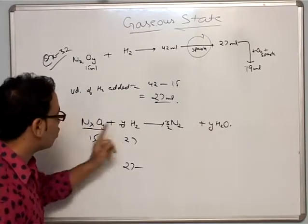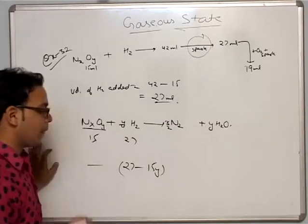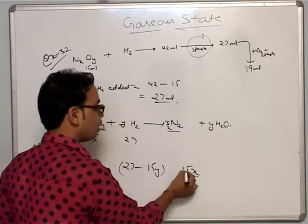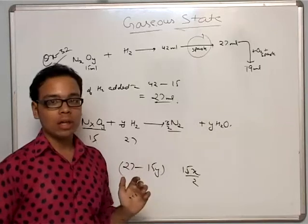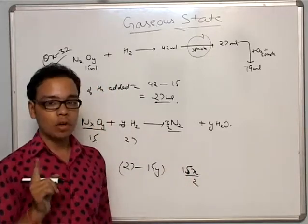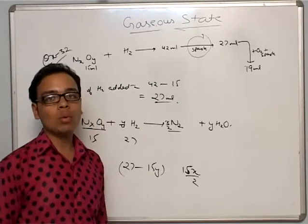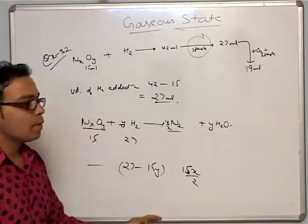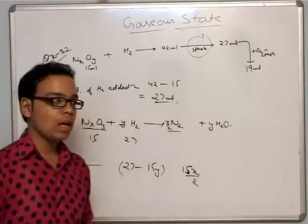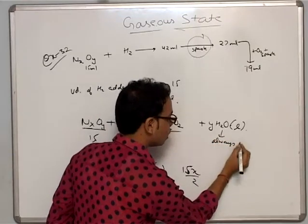When 1 ml of NxOy consumes Y ml of H2, for 15 ml it consumes 15Y ml. Nitrogen produced: 15 × x/2. Water does not count because it is in liquid state, so it is not measured as a gas.